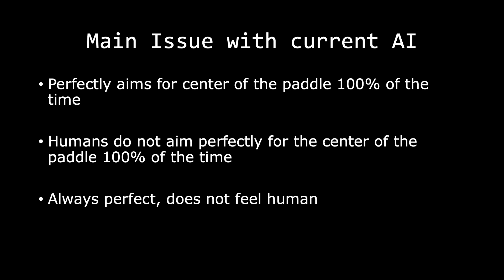However, there is one issue, and that is with our current A.I. In this case, it perfectly aims for the center of the paddle. Humans do not aim perfectly for anything, and especially not for the center of the paddle. And so because our A.I. is always perfect, it does not feel human. And that is an issue.